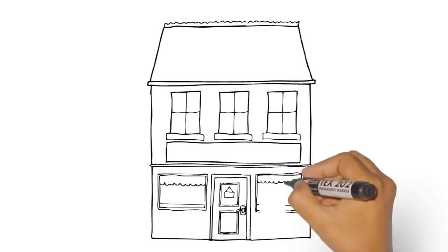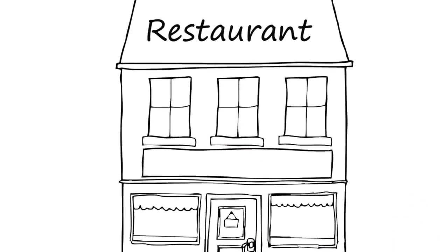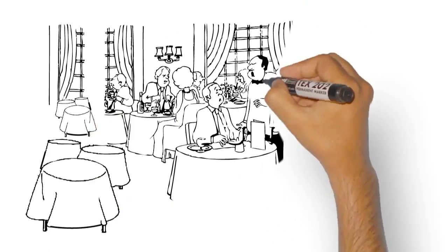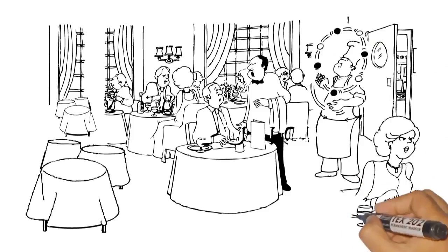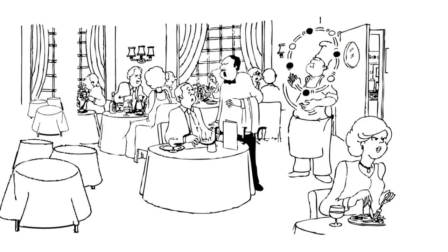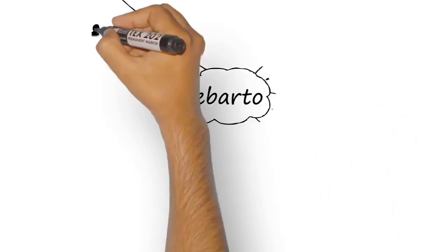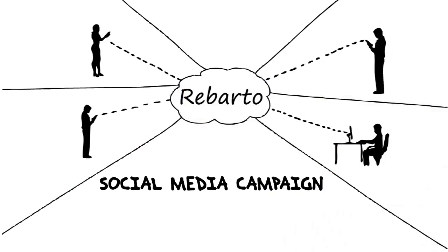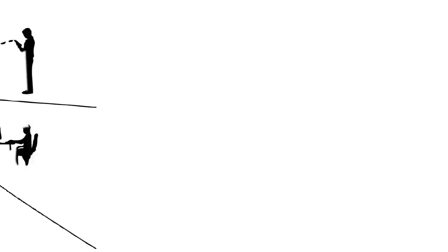This is your restaurant. Your customers love the food and the atmosphere, but there are still some tables empty and you'd like to fill them up. Enter Robarto. Robarto helps you create a social media campaign to raise awareness about your restaurant.